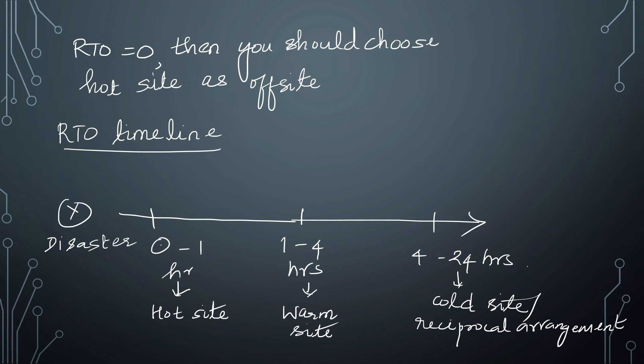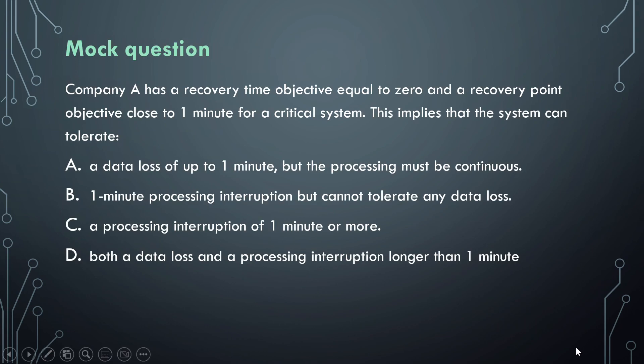Always remember: RPO relates to data loss and RTO always relates to downtime of the system. Based on RPO you decide on the frequency of backup; based on RTO you decide on the recovery strategy for the alternate site. Now let's discuss a practice question relating to RPO and RTO: a company has an RTO equal to zero and an RPO close to one minute for a critical system. This implies that the system can tolerate which of the following?